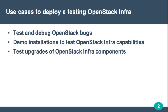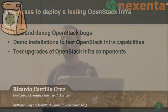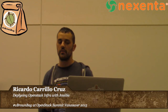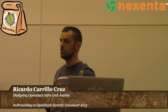Another use case could be demo installations to test OpenStack Infra capabilities — for organizations that would like to have a CI infrastructure and want to see if OpenStack Infra fits their needs. And another use case could be testing upgrades of OpenStack Infra components, for organizations that already have an OpenStack Infra CI and would like to test early upgrades of key components like Gerrit or Zuul, which are very key to the whole functionality.